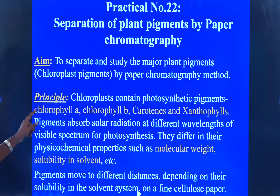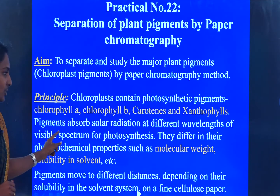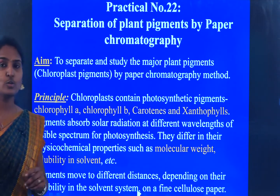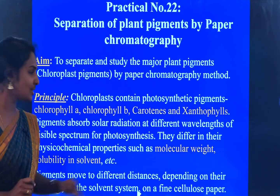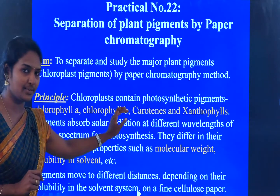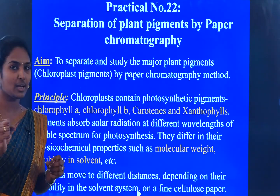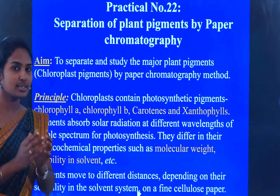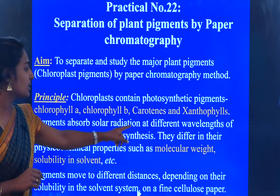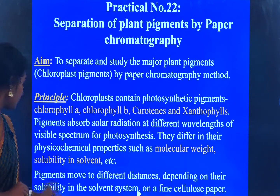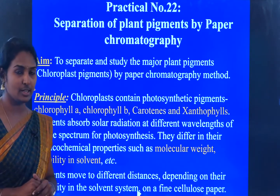Pigments absorb solar radiation at different wavelengths of the visible spectrum for photosynthesis. These pigments differ mainly in their molecular weight and their solubility in the solvent.